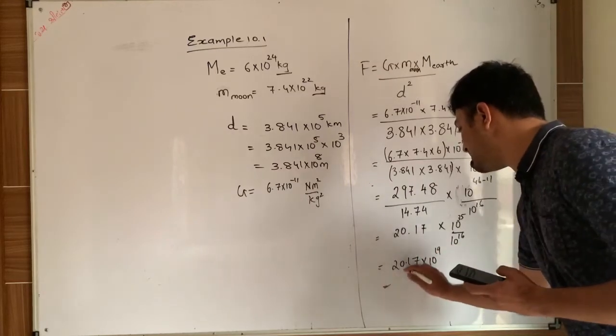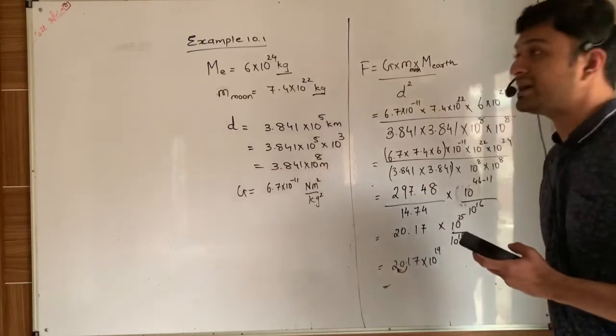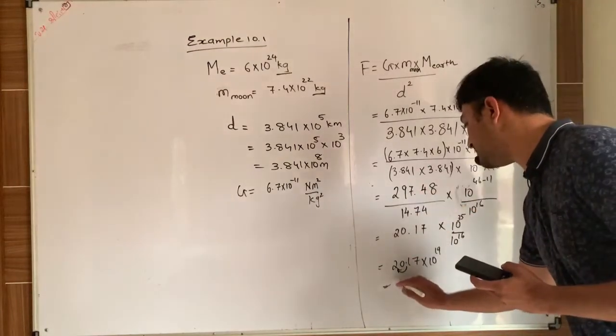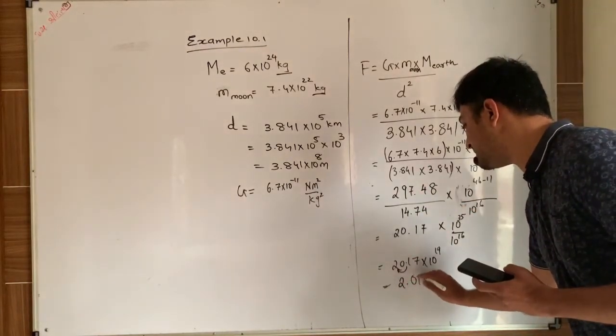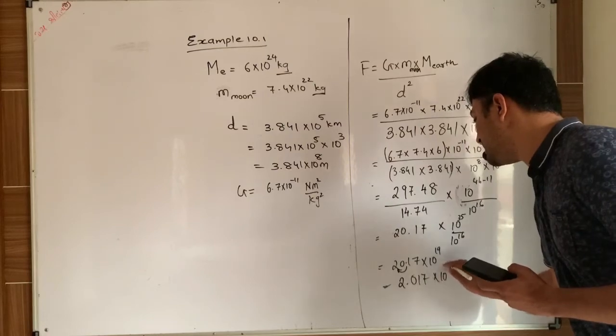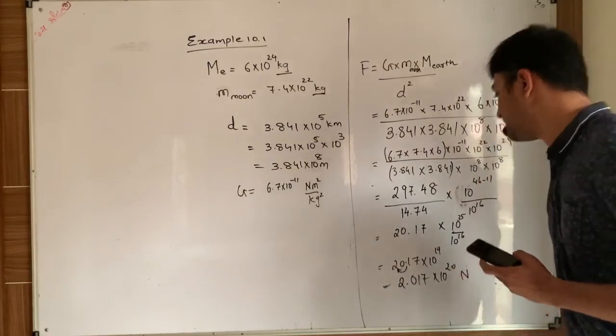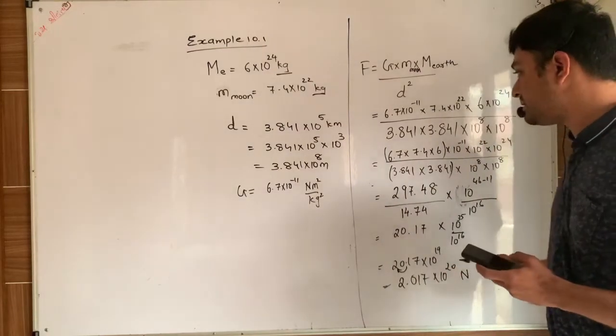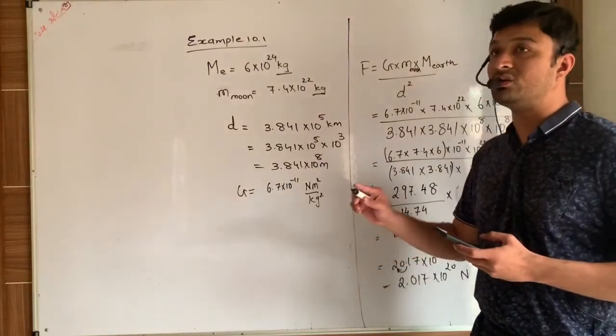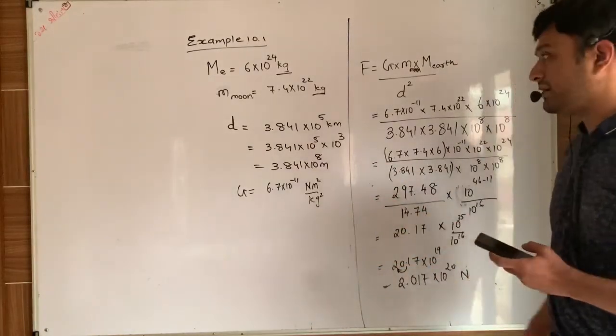That means if you just have the standard form of number, that is after positive number, you have to shift one digit. So it is 2.017 into 10 raise to 20 Newton. Because if you are moving opposite to the number line, then you have to increase the power of 10.